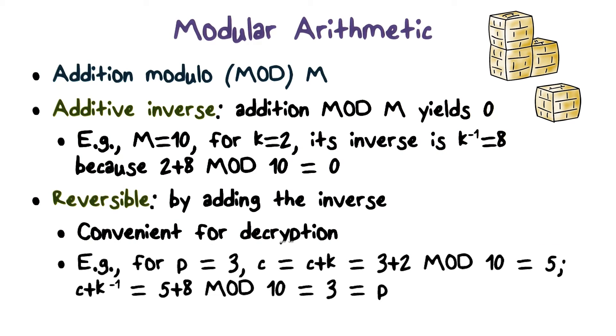Now how do we decrypt? To decrypt, we use the same process, but instead of using the key, we use the key's inverse. We know that the inverse of 2 is 8. Therefore, c + k^(-1) = 5 + 8 mod 10. That is, 13 mod 10. The result is 3, which is exactly the plaintext.